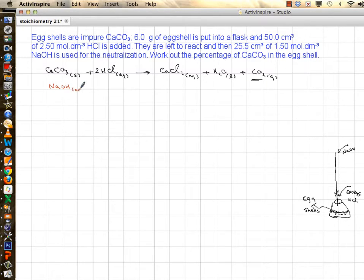And the second reaction is as follows: you have sodium hydroxide which reacts with your excess or leftover amount of HCl to give you sodium chloride, a salt, plus water. First thing I want to do is see how much HCl I used for the second reaction, then I will find out how much HCl I had at beginning, subtract the two. I know exactly how much HCl I used for calcium carbonate. Find moles of calcium carbonate, then mass of calcium carbonate, and compare it to the six grams of eggshell.